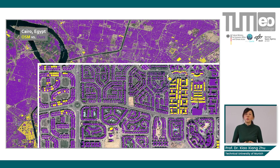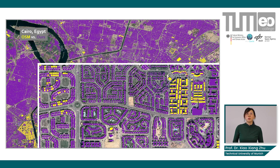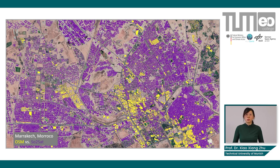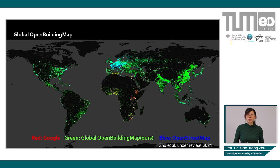Zooming into New Cairo, you see a very structured pattern. Even with coarse 3 to 5 meter resolution data, which is at the margin of resolving individual buildings, our tailored model is able to achieve near individual-level building mapping. The same applies for Marrakesh.